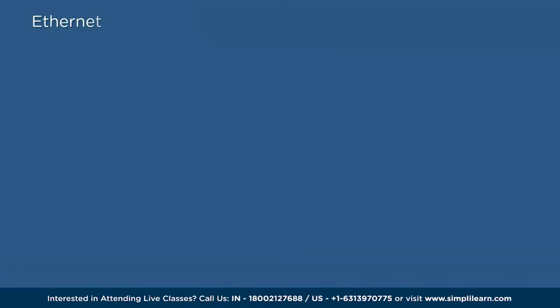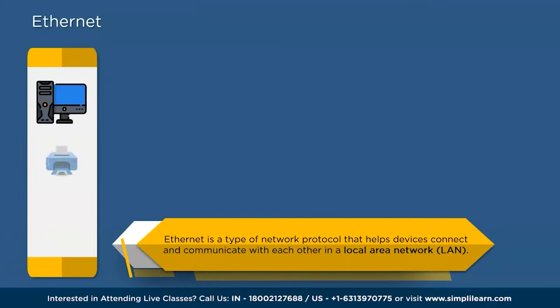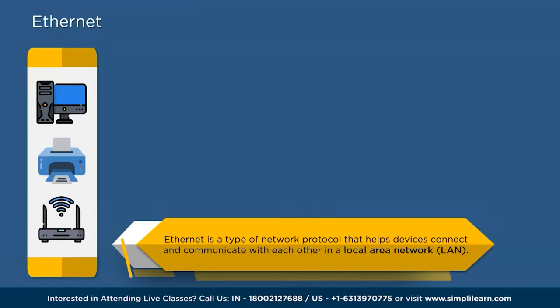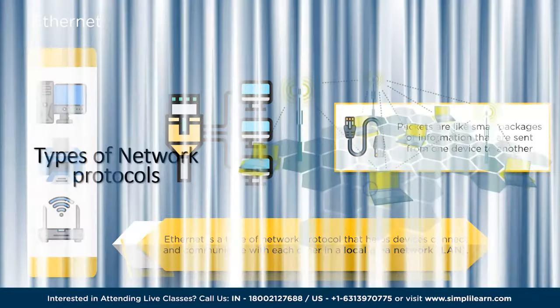Ethernet is a type of network protocol that helps devices connect and communicate with each other in a Local Area Network (LAN). It is like a highway that allows data to travel between devices such as computers, printers, and routers. Ethernet uses a set of rules and procedures to transmit data in the form of packets — like small packages of information sent from one device to another. It ensures that these packets are delivered to the right destination and in the correct order, acting as the road system that connects all devices in a network.